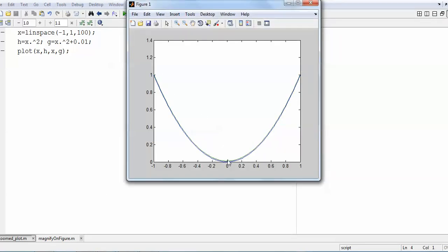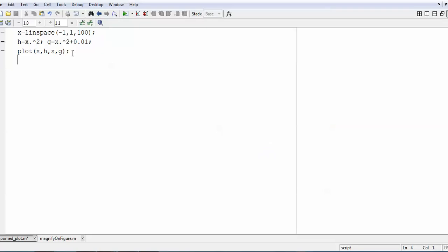You can see that these two graphs are very close and you wish to show this zoomed plot near 0 or anywhere where you wish. So what you will do? You can start with the command axis.